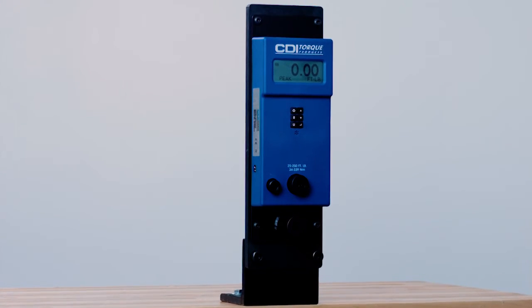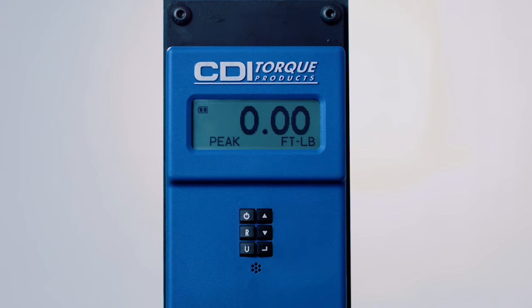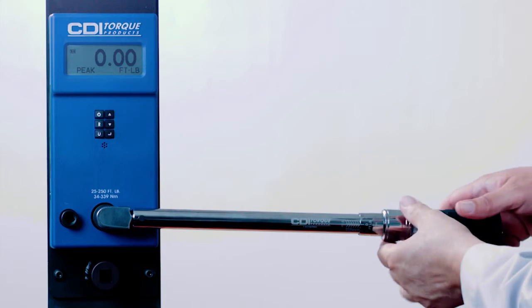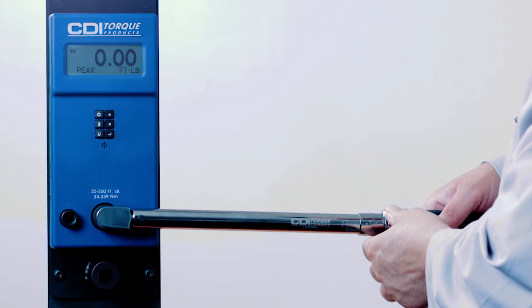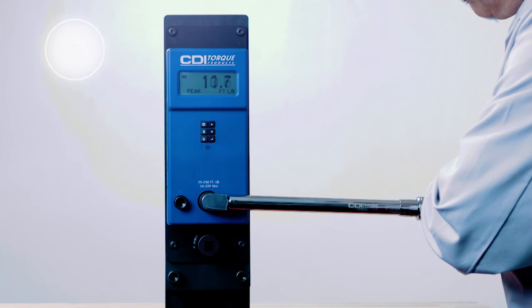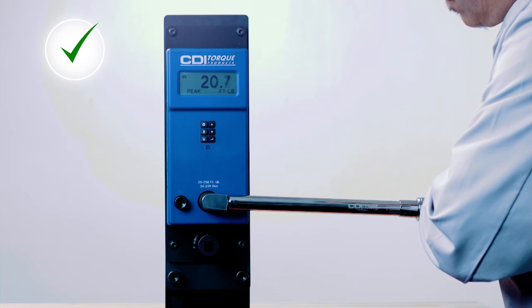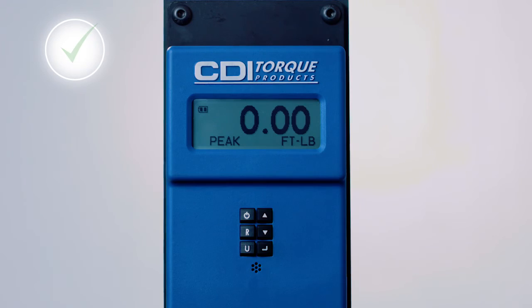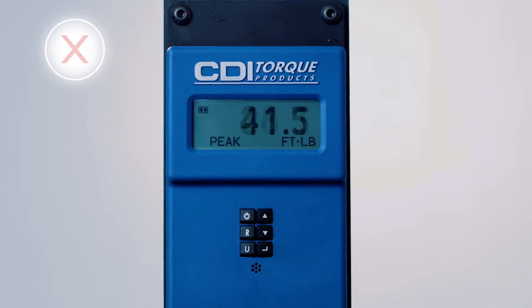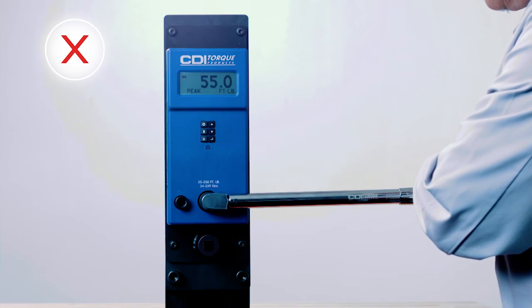To use the DTC as a torque trainer for click wrenches, set the DTC to peak mode, set the torque wrench to desired setting, and test. If the wrench is used correctly, the result should be close to the setting on the wrench. If the DTC reading is much higher than the wrench setting, it means the user is applying too much force and therefore more practice is required.